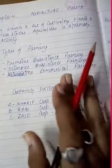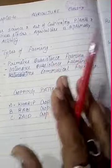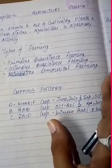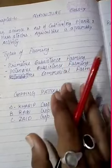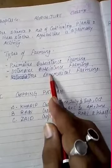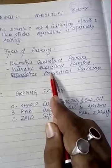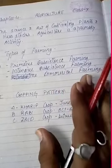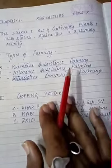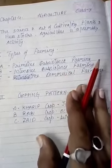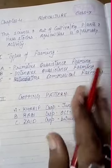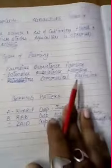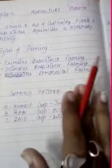The second type is subsistence farming. This type of farming is practiced in areas with high population pressure on land. It is labor-intensive farming where high doses of biochemical inputs and irrigation are used to obtain higher production. Though land division among successive generations has reduced land holding size, farmers continue to take maximum output from the limited land. It is mostly practiced in India.